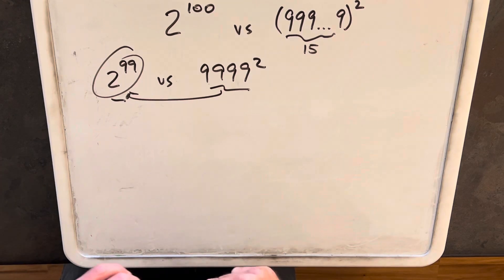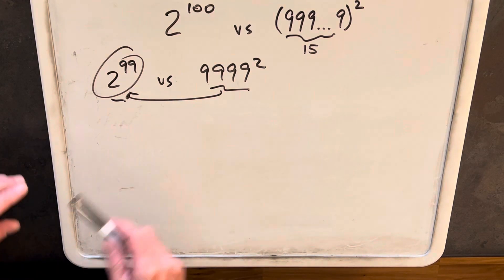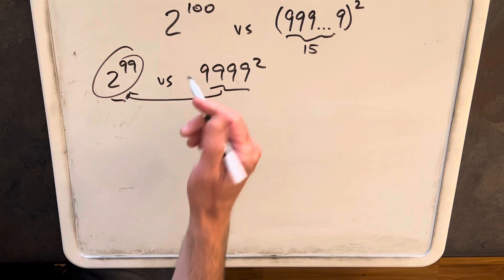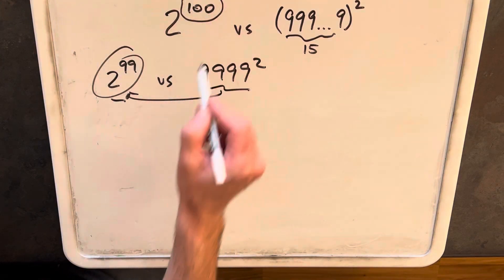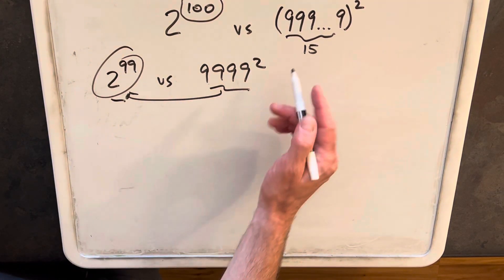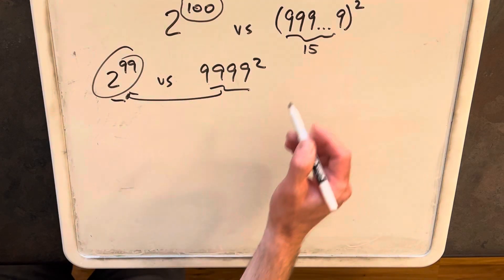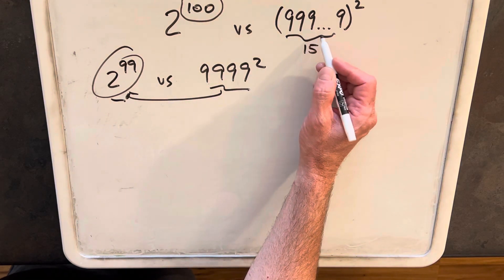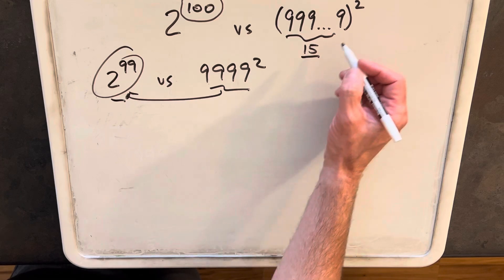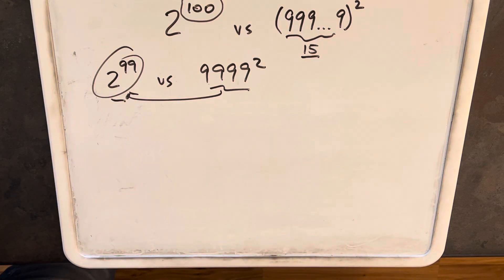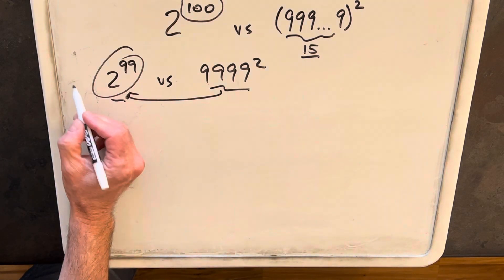What I found was it actually is a little bit tricky to work with 2 to the 99, so what I thought I would do is switch it and kind of cheat and work with 2 to the 100. And then so we have a straightforward which is bigger problem: 2 to the 100 power versus a string of nines, 15 nines long squared. So we'll work on that problem, and maybe we can come back to this later.